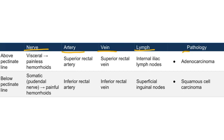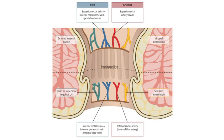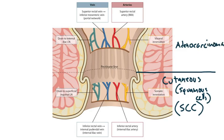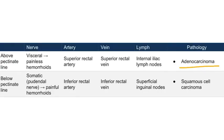Now I want to draw your attention to the pathology column. Rectal cancer above the pectinate line would be adenocarcinoma, while rectal cancer below would be squamous cell carcinoma. Below the line is cutaneous — skin is composed of stratified squamous epithelium, so cancer here is squamous cell carcinoma. Above the line is part of the rectum, much like the rest of the colon, and colorectal cancer is adenocarcinoma. So adenocarcinoma above the pectinate line, squamous cell carcinoma below.